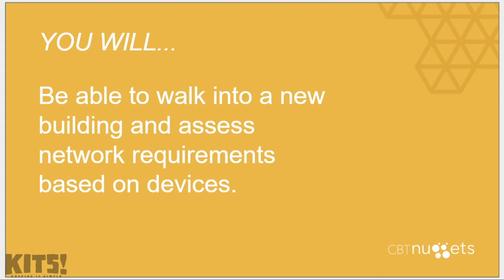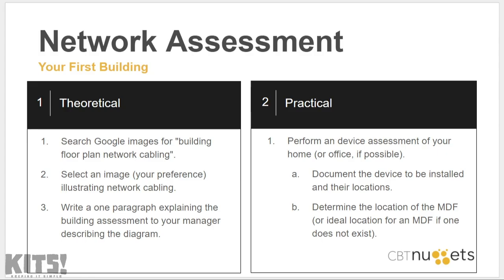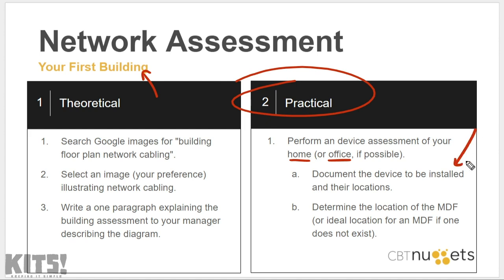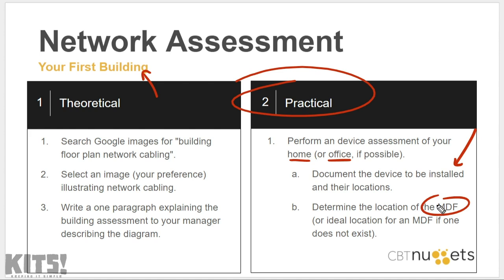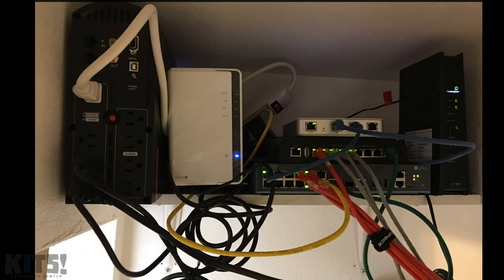At the beginning of this nugget I mentioned you will be able to walk into a new building and assess network requirements based on devices — here's how we're going to prove that. Ideally you'll be able to do a practical assessment of your first building: perform a device assessment of your home or office, or if you've got a church or nonprofit that will allow you to do some network cabling for free, maybe they'll buy the cable and let you get the experience. The first thing I want you to do is document the devices to be installed and their locations. Find your Roku, find your Xbox — if it's on wireless, it's time for that device to be wired. Create a floor plan just like we did and identify where the devices will be installed.